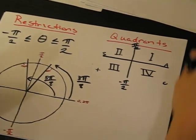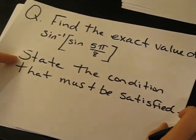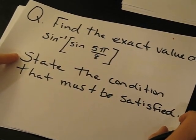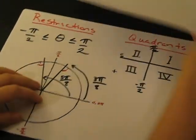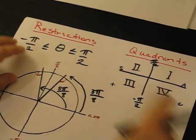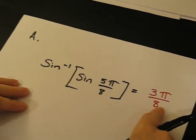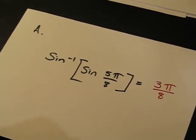And so the answer to our question, find the exact value of the inverse sine of sine 5-pi over eight with the condition that it's within the interval of negative pi over two and pi over two, the solution is positive 3-pi over eight. Thanks for listening. I hope it's been helpful for you.